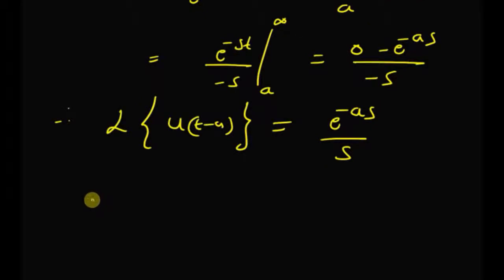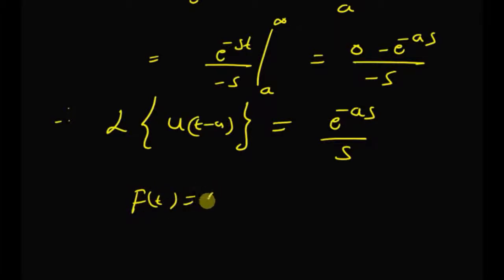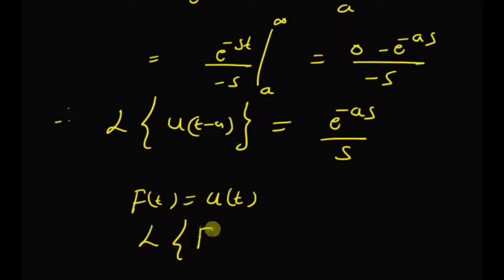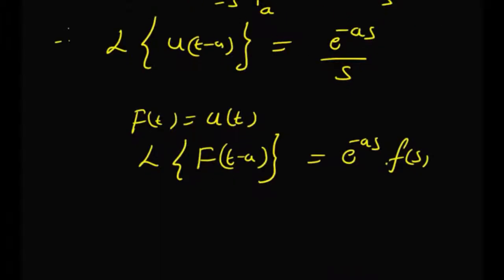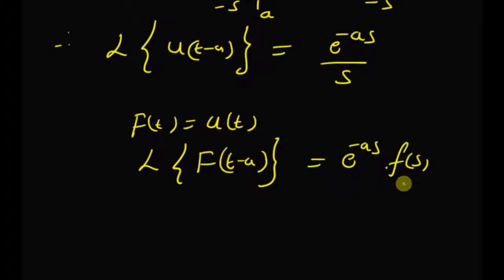We can also use the shifting property to determine the Laplace transform. Assuming f of t is equal to the unit step function u of t, then by using the property that the Laplace transform of f of t minus a equals e to the power minus a s times F of s. Clearly, for u of t, the Laplace transform F of s is 1 by s.